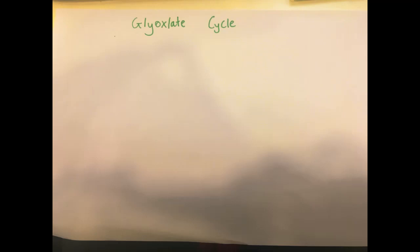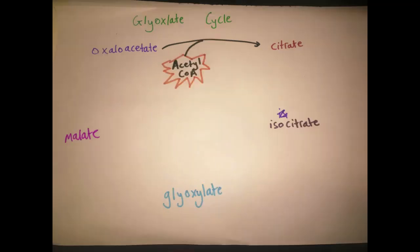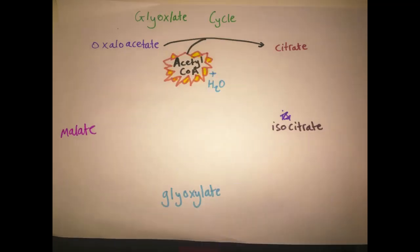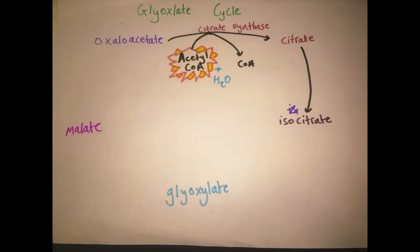It's similar to the citric acid cycle in that it starts with a molecule of oxaloacetate binding with acetyl-CoA and water to give a molecule of citrate. This is a hydrogenation reaction and is catalyzed by citrate synthase.